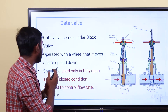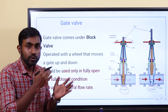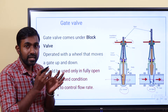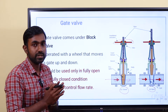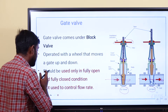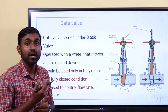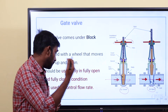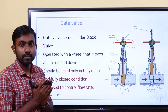The gate valve should be used only in a fully open and closed condition — that's very important. We can't regulate the water or change the flow discharge variation. It's either closed position or open position. The gate valve is not used to control flow rate. If you're looking to control flow rate, we can't use the gate valve directly.